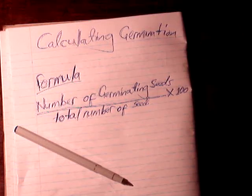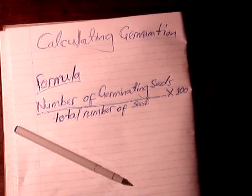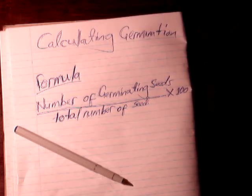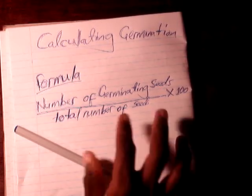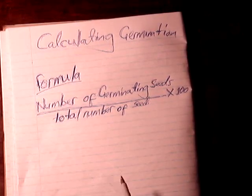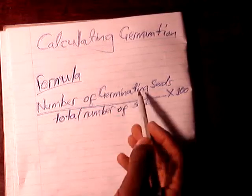Hello, welcome to another video. In this video I want to be looking at how to calculate germination. Germination is the beginning of growth in plants, and the three conditions that are necessary for germination to take place are oxygen, moisture, and suitable temperature.